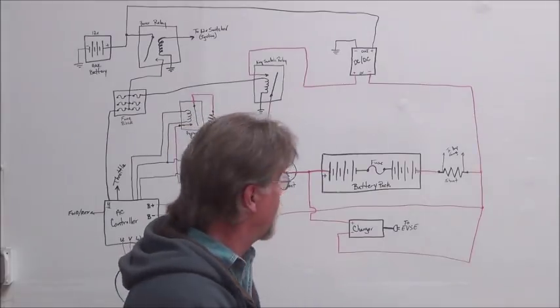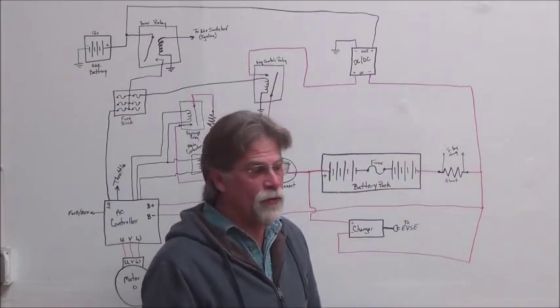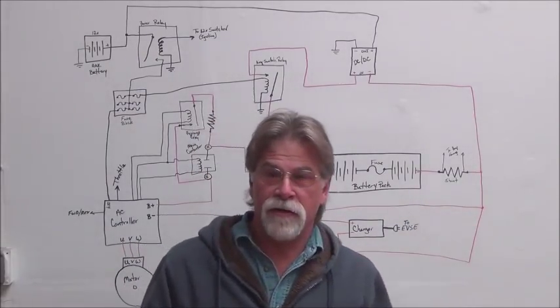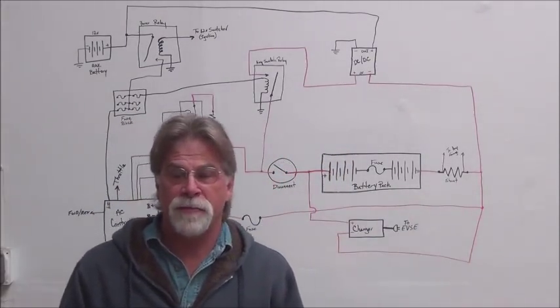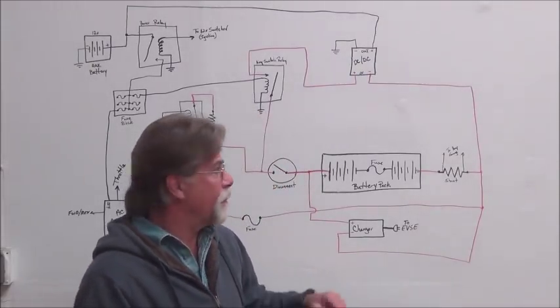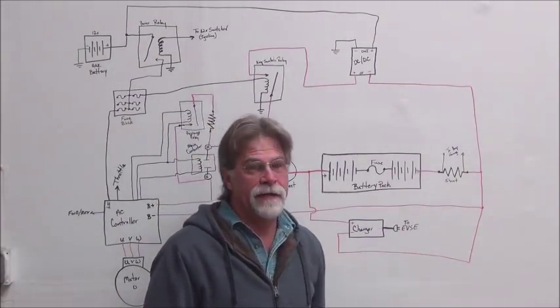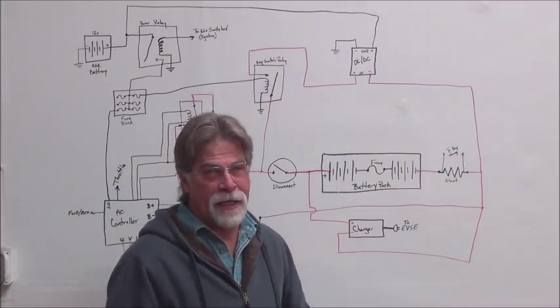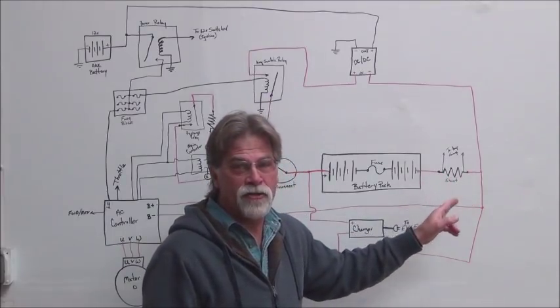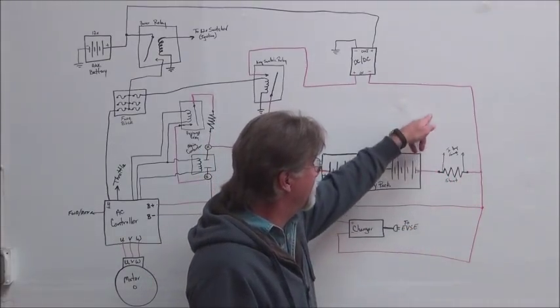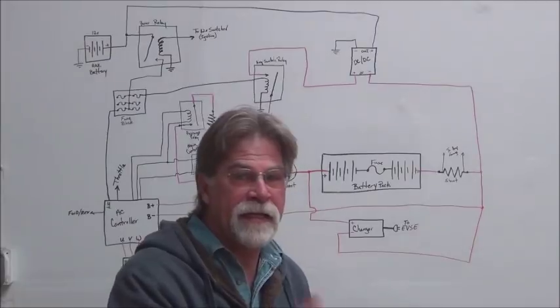The shunt - some use a Hall effect or a current detector or some other type, but we use a shunt. A shunt is just basically a known resistance. What we're doing is we're measuring the voltage drop across that known resistance, and it's converted to amps on a gauge. But that has to be the negative most point in our circuit. We don't want anything coming off the battery pack before the shunt. Everything has to come off after the shunt so that we can measure all of the current in and out of that pack.